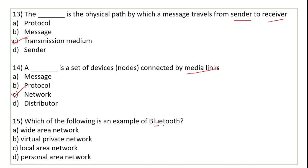Which of the following is an example of Bluetooth? Bluetooth 10 meter ki range mein network create karta hai. Toh yeh kya hai — humara Personal Area Network. Bluetooth ki help se hum ek chhota sa network create kar sakte hain within a 10 meter distance.